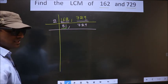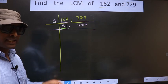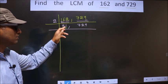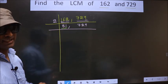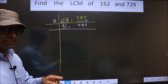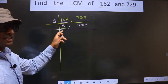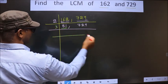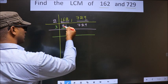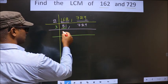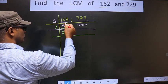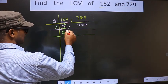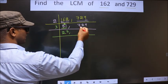The next prime number is 3. To check divisibility by 3, we add the digits: 8 plus 1 gives us 9. Is 9 divisible by 3? Yes. So this number is also divisible by 3, and we take 3 here. The first number is 8. A number close to 8 in the 3 table is 6. 8 minus 6 is 2, carried forward making it 21. When do we get 21 in the 3 table? 3 sevens are 21.